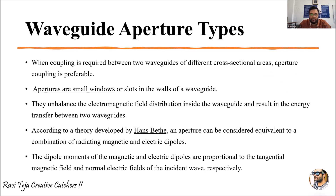These apertures are mainly used to couple two different waveguides of different cross-sections. Whenever some energy is transmitting through these apertures, they unbalance the electromagnetic field distribution inside the waveguide, which results in energy transfer between any two waveguides. Due to these apertures, there will be an imbalance in the electromagnetic field distribution, and the transfer of energy will happen between these waveguides.